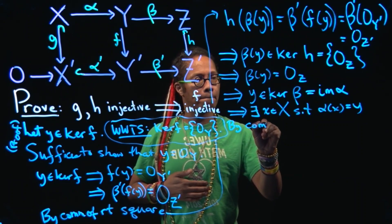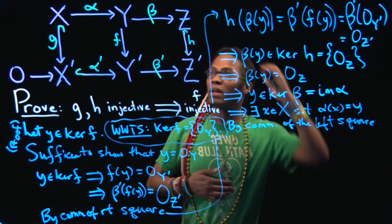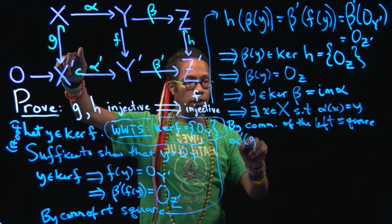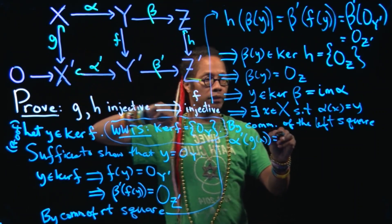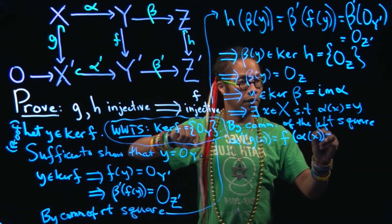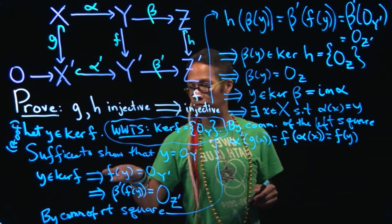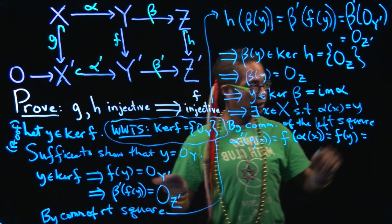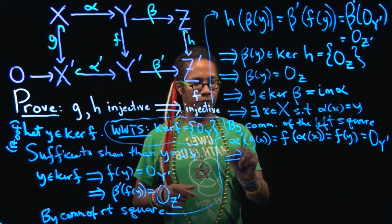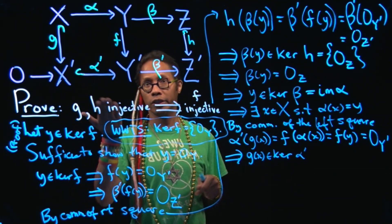So by commutativity of the left square, so we have a little X in here. I know that alpha prime of G of this X is the same as F of alpha of X. But alpha of X is equal to Y. And Y is in the kernel of F. So F of Y is equal to 0 sub Y prime. So that means that G of X is in the kernel of alpha prime. Yay! Now we can use the injectivity of alpha prime.